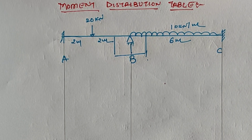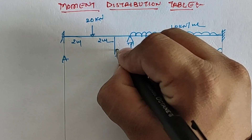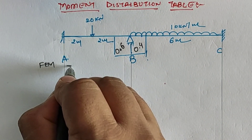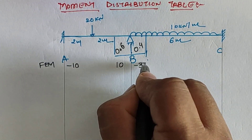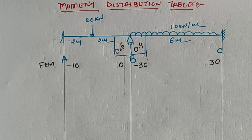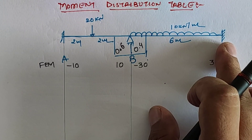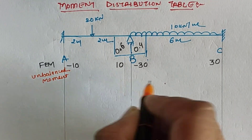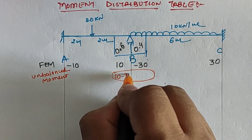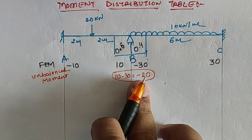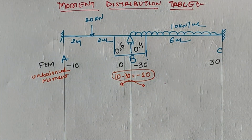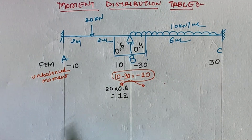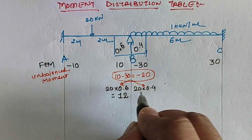Now proceeding with the distribution of unbalanced moment. We have distribution factors 0.6 and 0.4 for spans BA and BC respectively. Both end supports are fixed, so we need not balance the moment at those ends. The unbalanced moment at joint B is 10 minus 30, which equals minus 20. Due to the negative unbalanced moment, we distribute it as positive: 20 into 0.6 equals 12, and 20 into 0.4 equals 8.